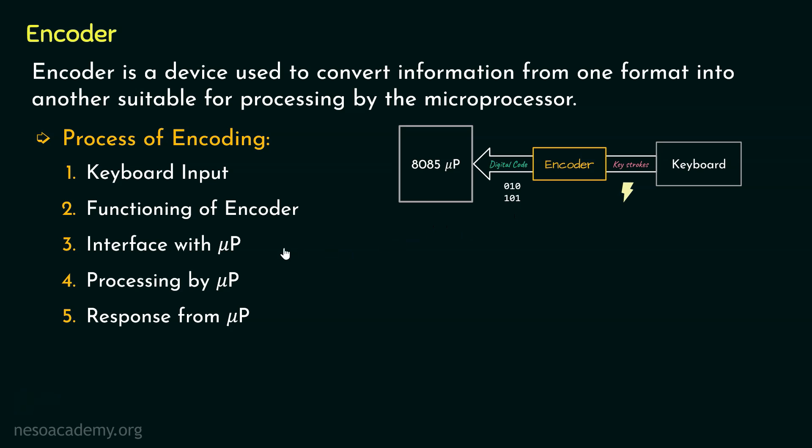So this is what I meant when I said the encoder is a device which is used to convert information from one format into another, that is, the electrical charge is now converted into a digital code, clearly from one format into another, and the digital code is suitable for the processing by the microprocessor, that is, the microprocessor is able to understand the digital code, not the electrical signals of the keystrokes.